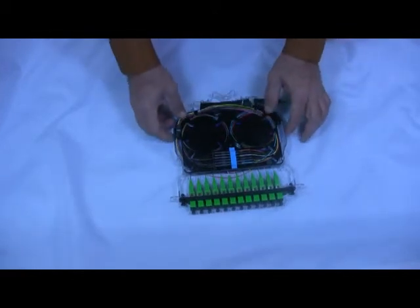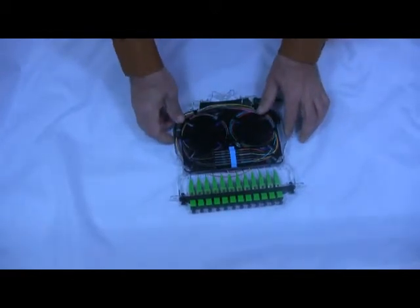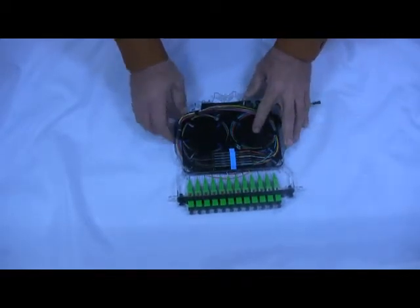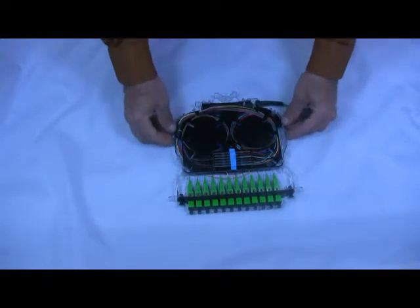Now you're ready to close up your splice tray and your cassette. In every situation, the 900 micron is always on this side of the cassette. The 250 micron is on this side.